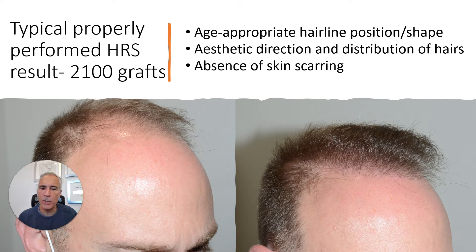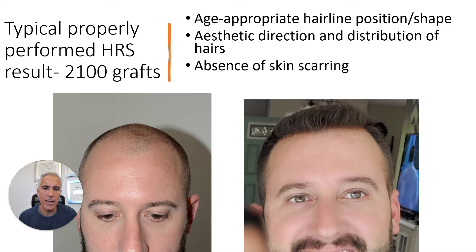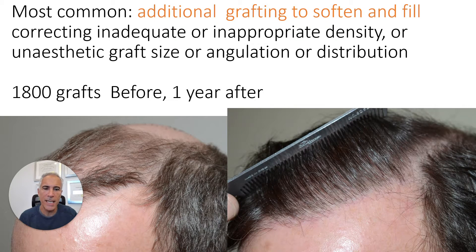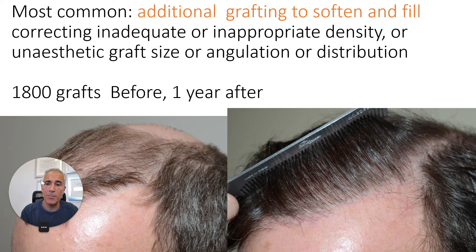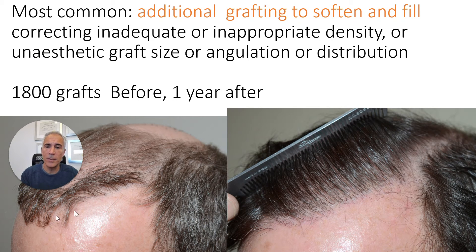We all know what natural hair transplants look like: natural recessions, feathered hairline. Another example — there's no skin scarring when hair transplantation is done properly; the results are quite aesthetic. However, what happens when they're not done aesthetically? This is an example of a natural-appearing hairline with large grafts.